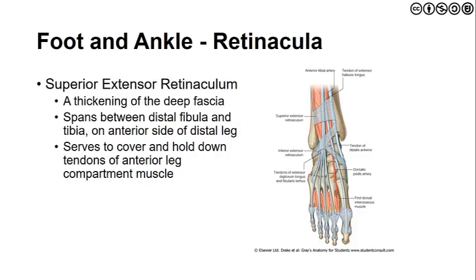The superior extensor retinaculum is a crucial thickening of the deep fascia spanning from the tibia to the fibula, proximal to the talocrural joint in the region of the distal tib-fib joint. It prevents tendons from bow-stringing, covering and holding down the tendons of the anterior compartment of the leg and maintaining their line of pull. There is also an inferior extensor retinaculum, both serving to preserve the biomechanical properties of these structures.